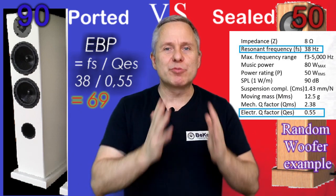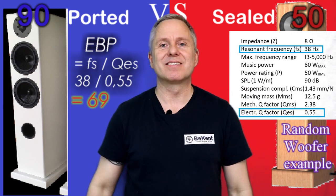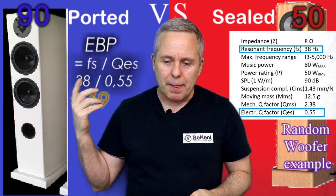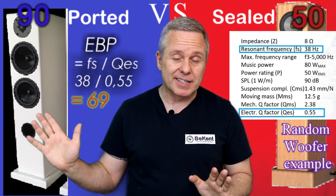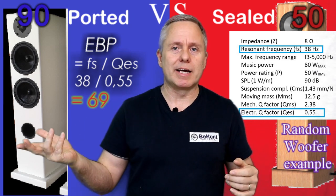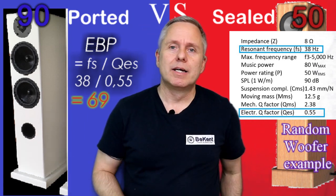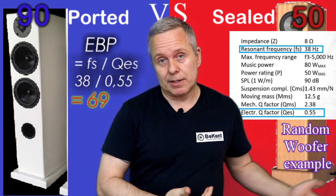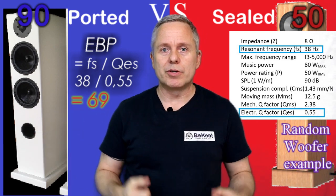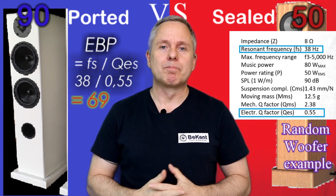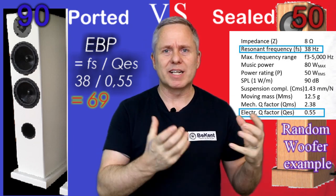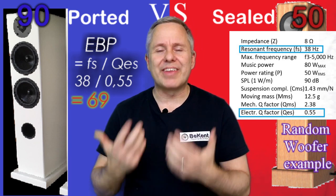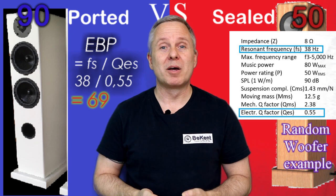The more space there is between impulses, the clearer the bass and the more you can hear small nuances in the instruments. On the other hand, if your EBP calculation lands around 85 or even 95, you'll get anemic bass — thin and transparent sounding. For those speaker drivers, you really want to look at a ported system.